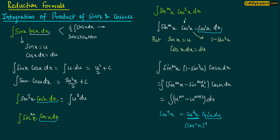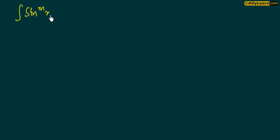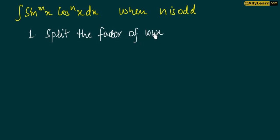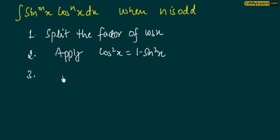So to generalize: we have integration of sin^m x · cos^n x dx when n is odd. The procedure is: first, split the factor of cos x (separate one cos x). Second, apply the formula cos²x = 1 - sin²x. Final step: put sin x equal to u. तो चलिए अब एक example देखते हैं.